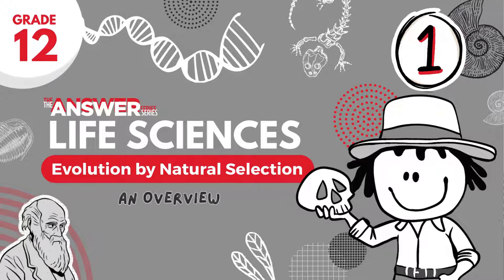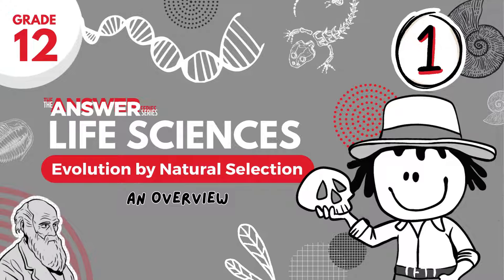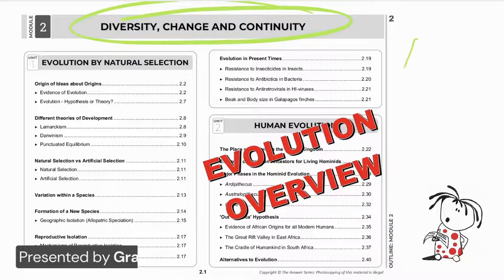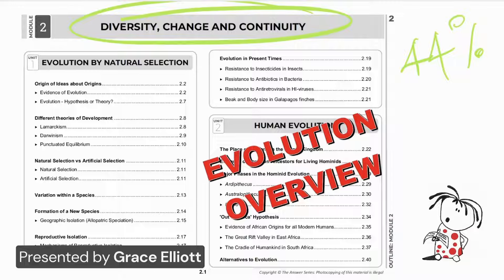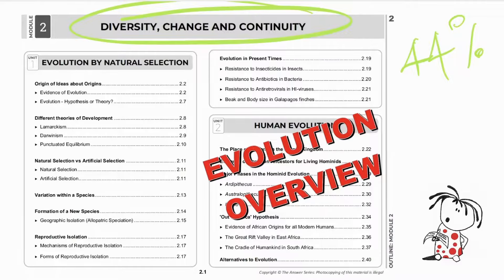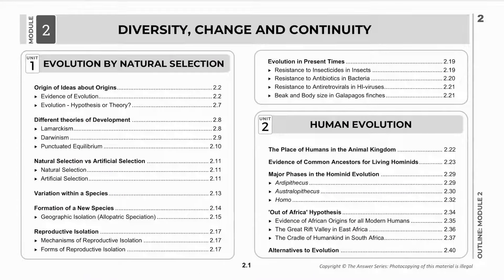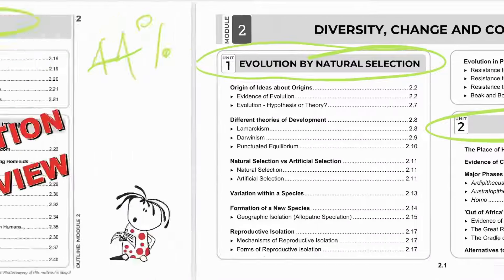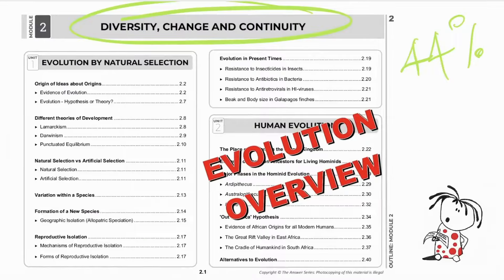This module on evolution forms part of diversity, change, and continuity. It forms 44% of paper 2 in the final exams, so it's a heavyweight topic. There are two sections: number one, evolution by natural selection, and number two, human evolution. This video is an overview of evolution by natural selection.